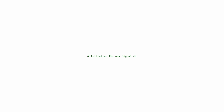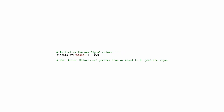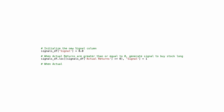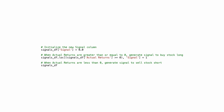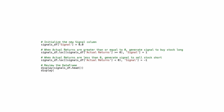This code creates a new column in the DataFrame called signal and sets all values to 0.0. Using conditional statements, it checks the values in the actual_returns column. If the value is greater than or equal to 0, the corresponding signal value is set to 1, indicating a buy signal. If the value is less than 0, it is set to -1, indicating a sell short signal. The code then displays the first and last few rows of the updated DataFrame with the new signal column.